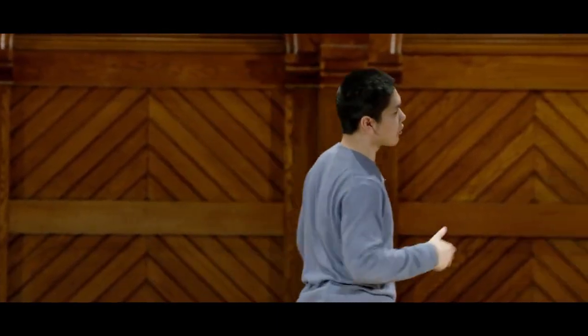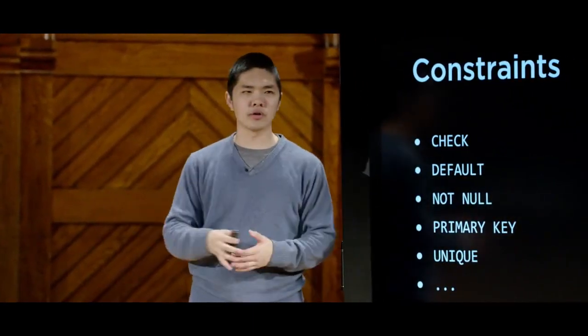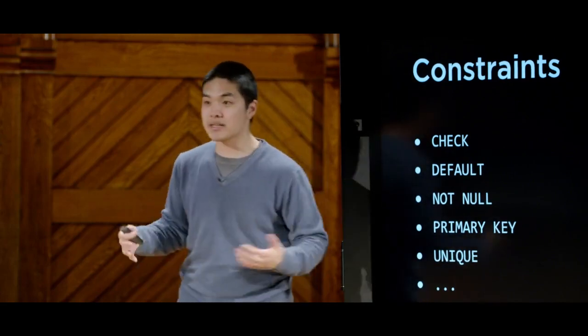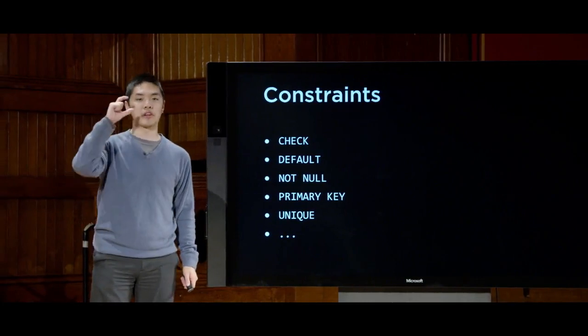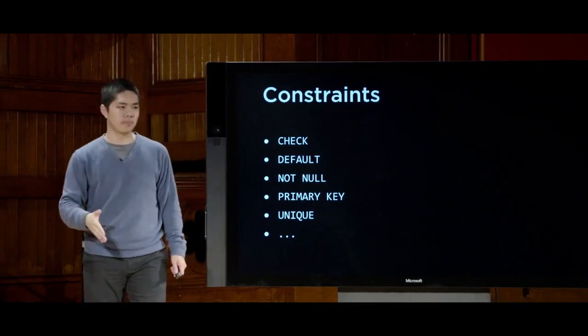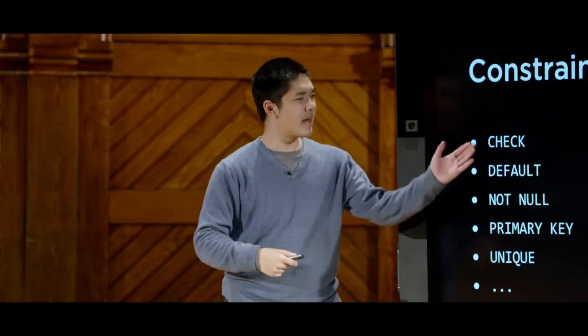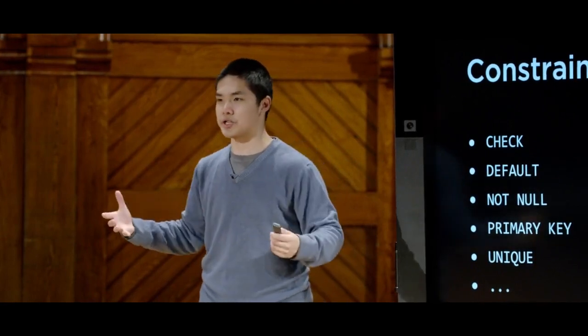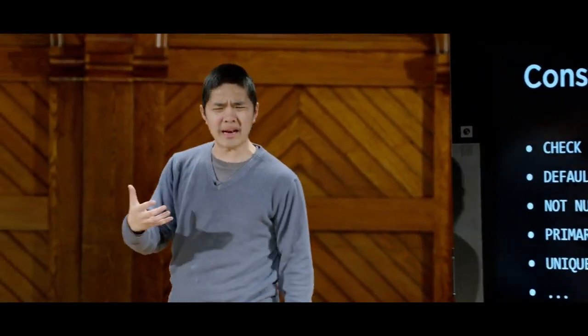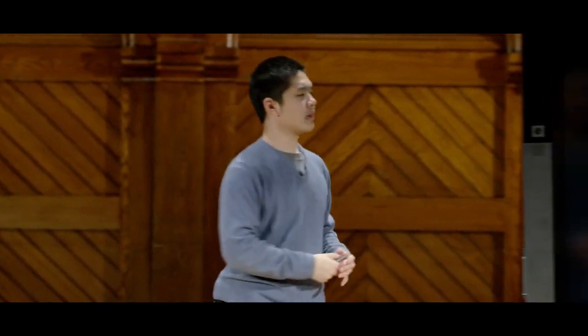There are a number of different types of constraints I can add to a particular column. Not null we've seen. You can add a default value to a column. Primary key we've seen. Unique guarantees that every value in a column is unique, so the same value can't appear twice. And check can be used to make sure a value obeys a certain condition — like a movie rating falling within the 1 to 10 range. Via constraints, you can ensure that data added to the table is going to be valid in some way.